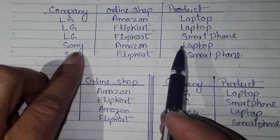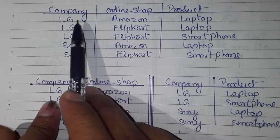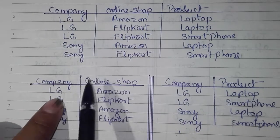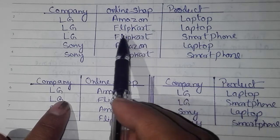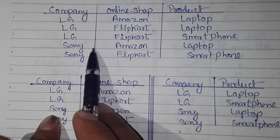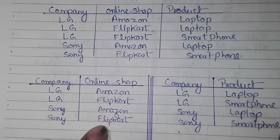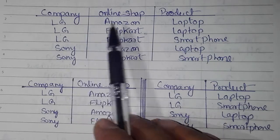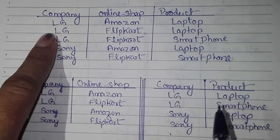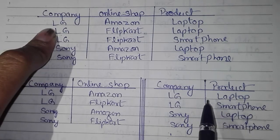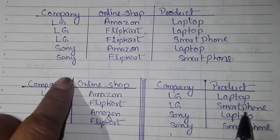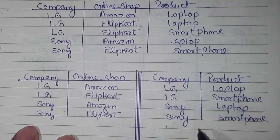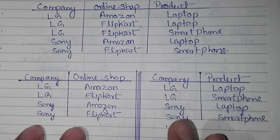To bring the table into 4NF, we split it into two sub-tables. Table one contains company and online shop information — LG can sell through Amazon and Flipkart, and Sony can sell through Amazon and Flipkart. Table two contains company and product — LG can sell laptop or smartphone, and Sony can also sell laptop and smartphone. This table is now in Fourth Normal Form.